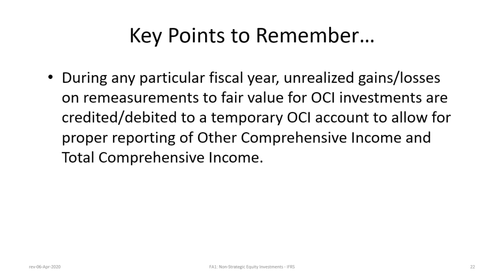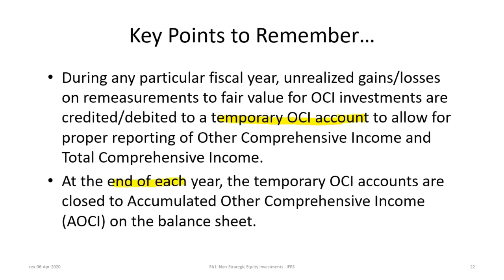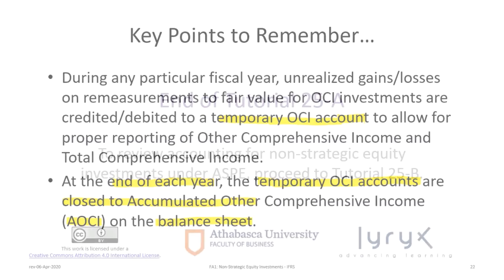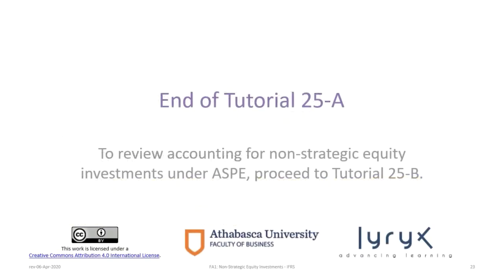During any particular fiscal year, unrealized gains and losses on remeasurements to fair value for FVOCI investments are credited or debited to a temporary OCI account to allow for proper reporting of other comprehensive income. Then at the end of each year, the temporary OCI accounts are closed to the accumulated OCI account — the AOCI — which is a balance sheet account. That concludes Tutorial 25A. I hope you found it useful. If you would like to cover equity investments under ASPE, you should proceed to Tutorial 25B.